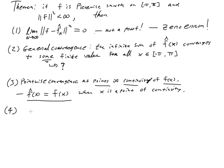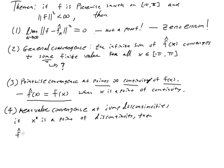Number four is what we call mean value convergence at jump discontinuities. Mean value convergence—so this is where things get interesting. If x, we'll call it x star, is a point of discontinuity, then f hat at x star—so the question then is, does the Fourier series choose one side or another? The answer is no.